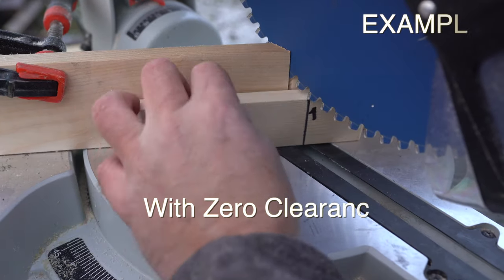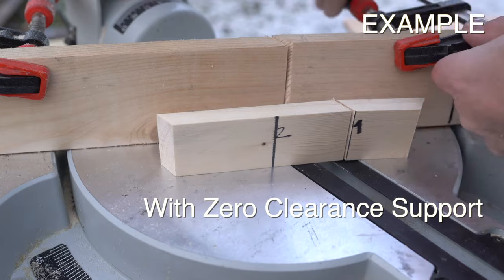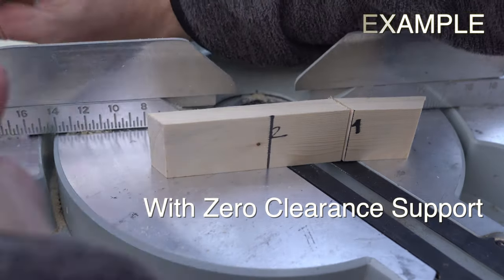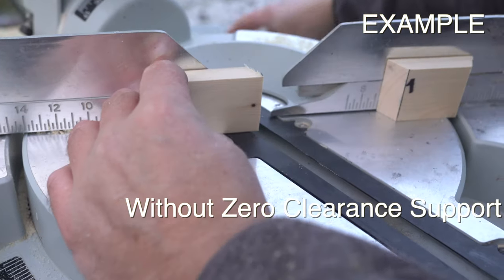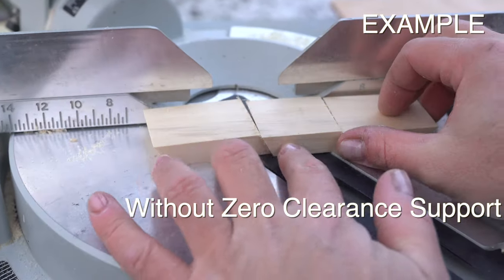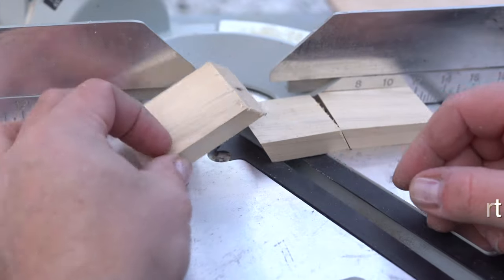This jig not only helps to speed up the cutting process but also reduces tear out on parts, acting as some kind of zero clearance support. Huge difference between tear out when you are cutting with or without this zero clearance support.